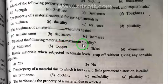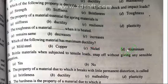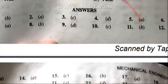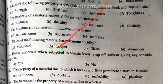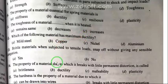Question 12: Which of the following material has maximum ductility — mild steel, copper, nickel, or aluminum? The right answer is A: mild steel. Mild steel is the material with maximum ductility.